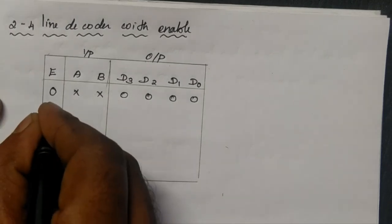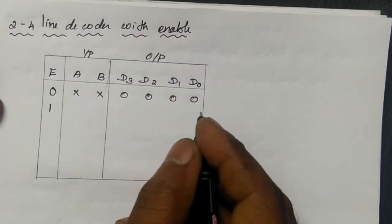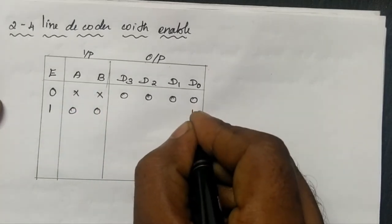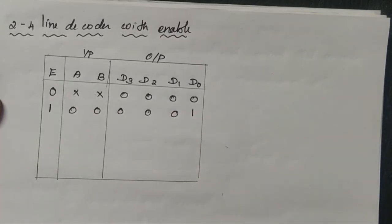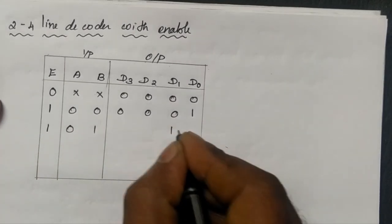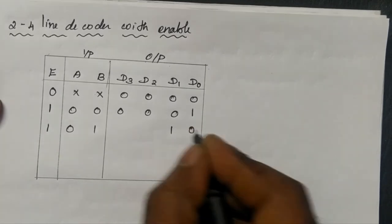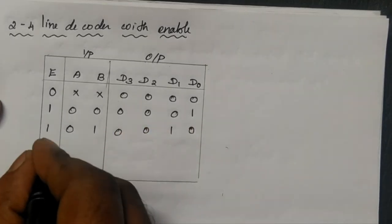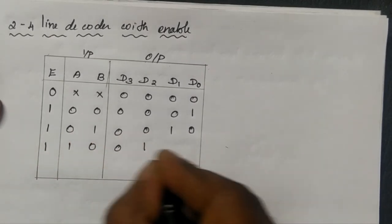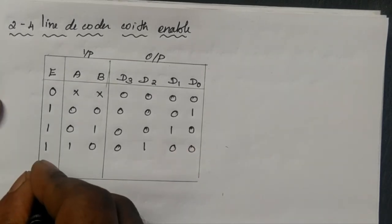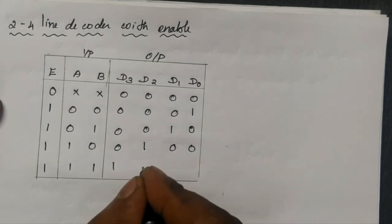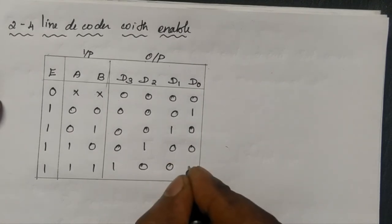When enable is equal to 1, the output depends on the input condition. For input 0,0: D0 output is equal to 1, remaining outputs are 0. When enable is 1 and input is 0,1: D1 output is equal to 1 and other outputs are 0. When enable is 1 and input is 1,1: D3 output is equal to 1 and remaining outputs are 0.